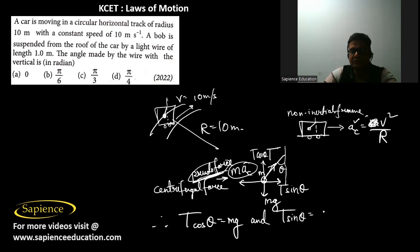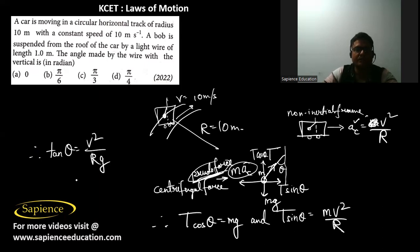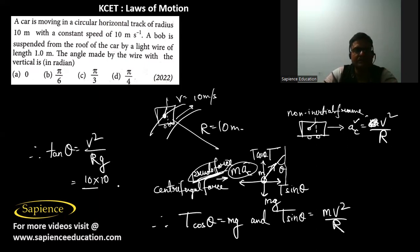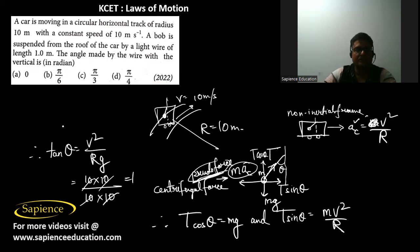T·sinθ = m·v²/r. Dividing the two equations gives tanθ = v²/(rg) = (10 × 10)/(10 × 10) = 1, so θ = π/4 radians. Option D is the correct answer.